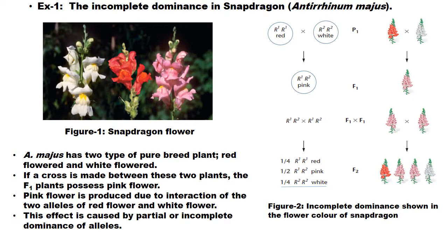The self-cross of F1 hybrid produces red, pink, and white flower plants in a ratio of 1:2:1, and they have the same phenotypic and genotypic ratio of 1:2:1.